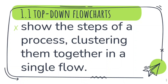Flowcharts have three types. Number one is top-down flowcharts. From the name itself — top-down — these go downward. You usually see this in enrollment processes, for example at BSU, or if you want to get your TOR or other documents. You may see posted flowcharts showing the processes you need to undergo before getting what you need. It shows the steps of a process, clustering them together in a single flow — this is the simplest type of flowchart.